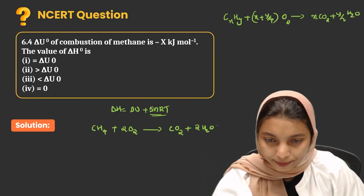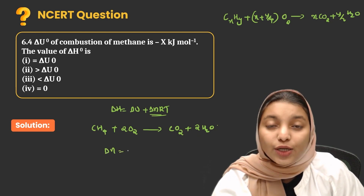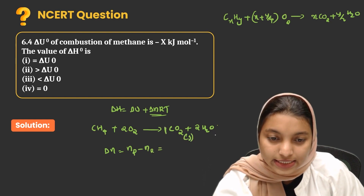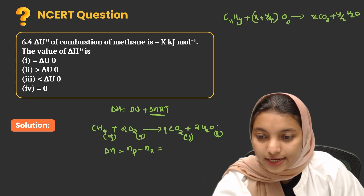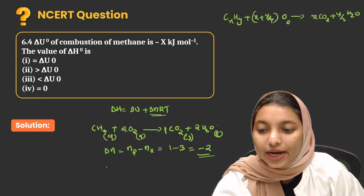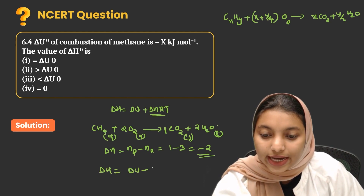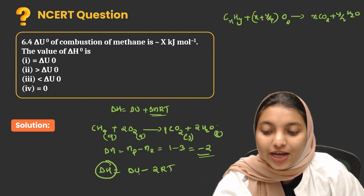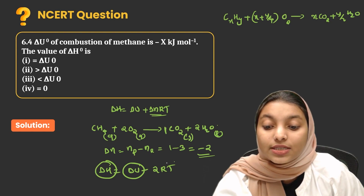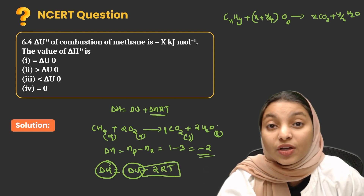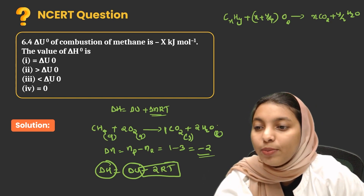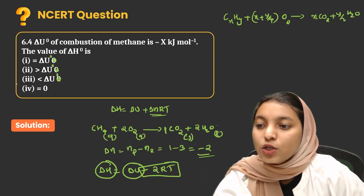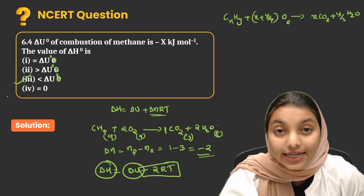Delta N value is number of gaseous products minus number of gaseous reactants. For CH4 combustion: CO2 is gas, H2O is liquid, CH4 and O2 are gas. So delta N = 1 minus 3 = minus 2. Therefore delta H = delta U minus 2RT, meaning delta H will be less than delta U. So the answer is option 3: delta H is less than delta U naught.